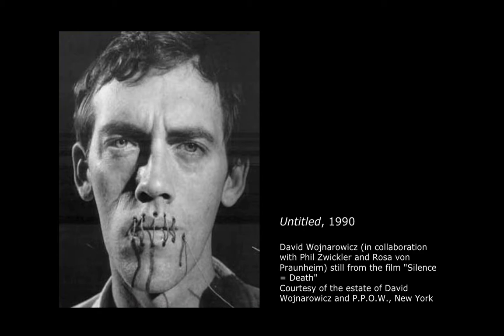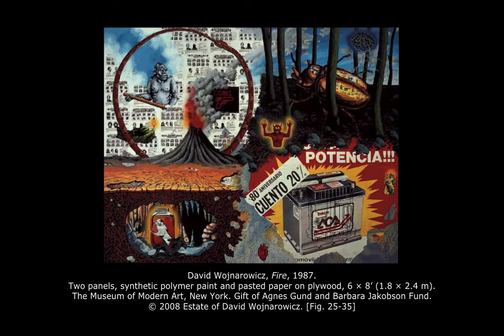He was part of the scene in the East Village of New York. He developed a collage aesthetic that was centered on the brutality of life, especially his pain growing up as a gay person in the United States amidst a backdrop of homophobia and AIDS. This work, titled Fire, from 1987, was made the same year that the artist was diagnosed with AIDS. It was also the same year that his lover, Peter Hujar, the photographer, died of the disease.